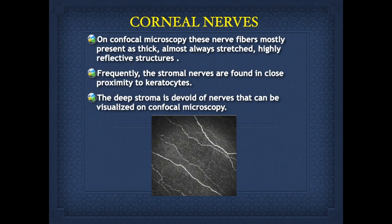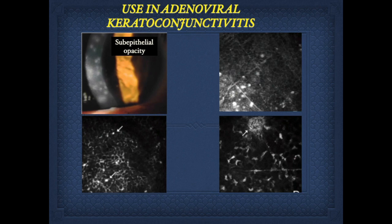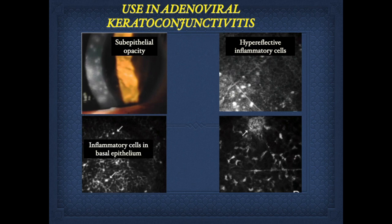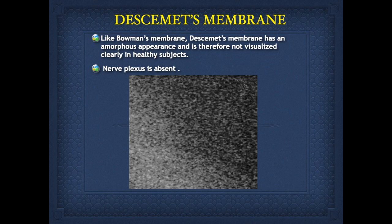Corneal nerves are very important in imaging. The stromal nerves are found in close proximity to keratocytes and the deep stroma is devoid of nerves — this can be visualized on the confocal microscope. The anterior stroma has sharply demarcated nuclear borders. Another example is adenoviral keratoconjunctivitis, where we can see hyper-reflective inflammatory cells in the basal epithelium and inflammatory foci in the anterior stroma. The posterior stroma has decreased density of keratocyte nuclei. Descemet's membrane, like Bowman's membrane, has an amorphous appearance and is not visualized in healthy subjects.